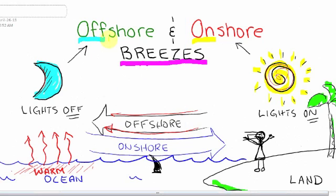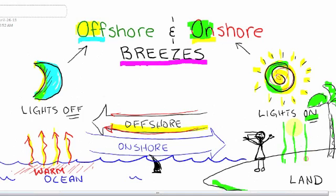Just remember: when the lights go off at night, that's when you have offshore breezes because the ocean water, which was warm during the day, is cooling and rising and pulling air off the land. And onshore breezes happen when the lights are on during the day because the land is being heated, the air rises, and it's replaced by air pulled in from the ocean.